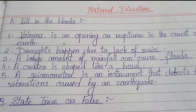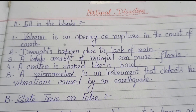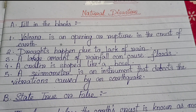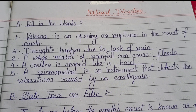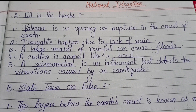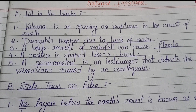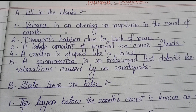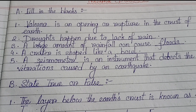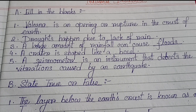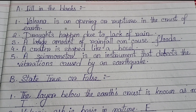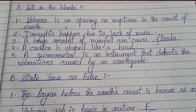Number A: Fill in the blanks. Number one: Volcano is an opening or rupture in the crust of earth. Number two: Droughts happen due to lack of rain. Number three: A large amount of rainfall can cause floods. Number four: A crater is shaped like a bowl. Number five: A seismometer is an instrument that detects the vibrations caused by an earthquake.